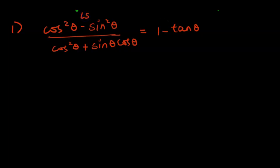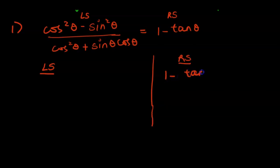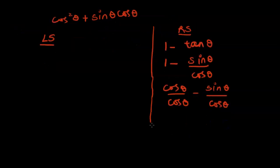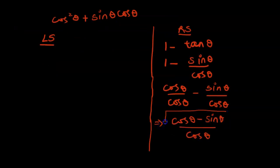This is our left side and this is our right side. We solve each side separately, following the rule of changing everything to sine and cosine form. On the right side we have tan theta, which is not in sine and cosine form. We know tan theta equals sine theta over cos theta. Making the denominators common gives us cos theta over cos theta minus sine theta over cos theta, which simplifies to cos theta minus sine theta over cos theta.